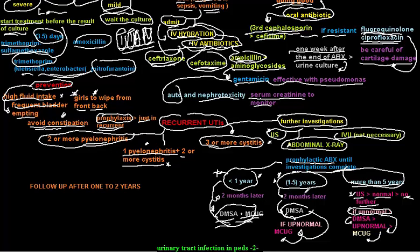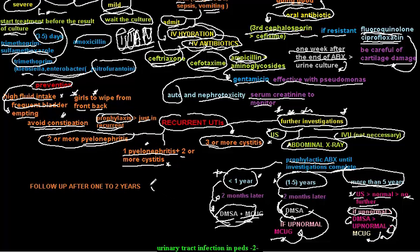More than five years: ultrasound — if normal, stop; if abnormal, do DMSA scan; if DMSA scan is abnormal, then MCUG. This is how to further investigate recurrent or atypical UTI. For follow-up, do a urine culture one week after termination of antibiotics, and follow up for one to two years.